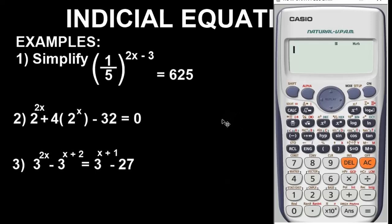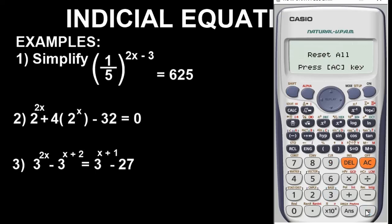As usual, I recommend the Casio calculator. To do that, you press Shift button 9 and follow the instruction to clear memory. Now let's input the values exactly as they appear. We have an open bracket, a fraction: 1 over 5.